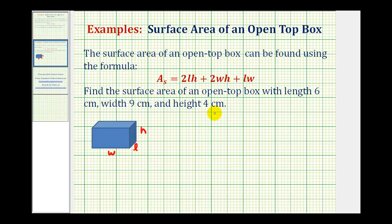So for this problem we're given that the length is equal to 6 centimeters, the width is equal to 9 centimeters, and the height is equal to 4 centimeters. So what this formula is doing, it's finding the area of the five faces, and that total area would be the surface area of the open top box.